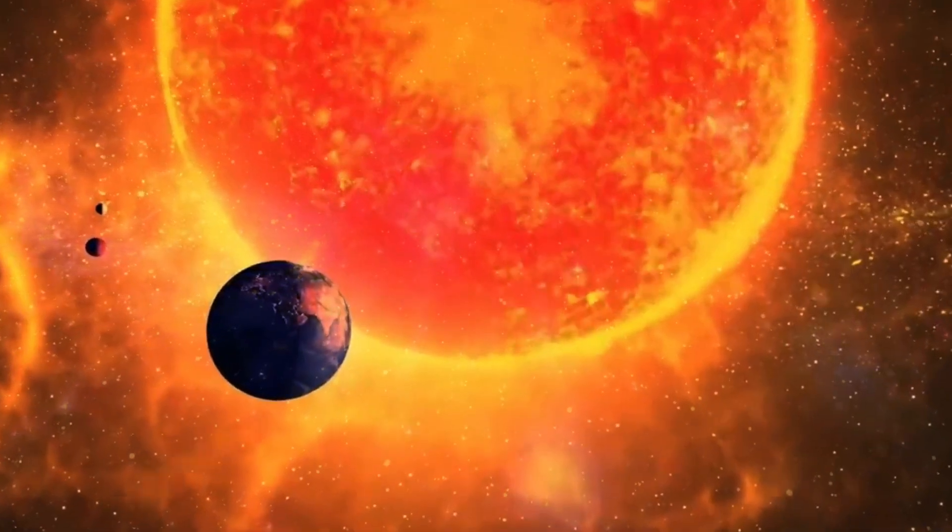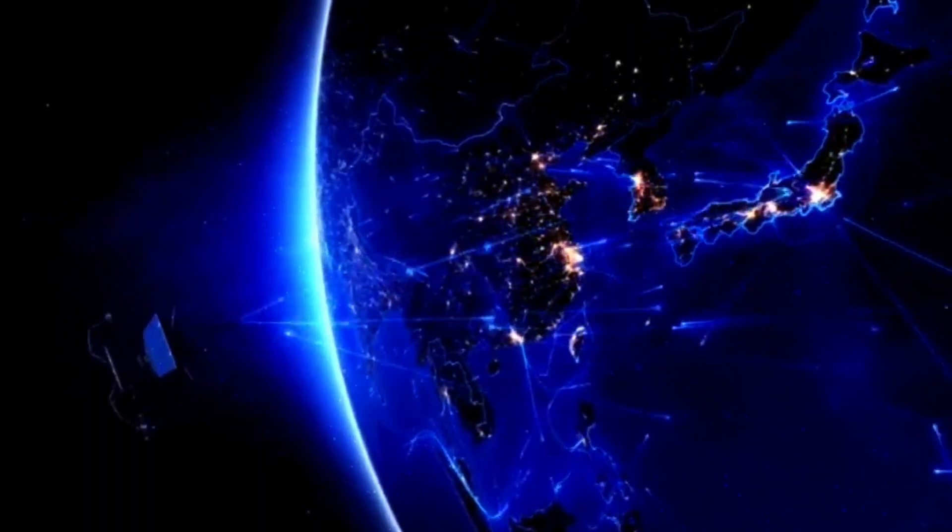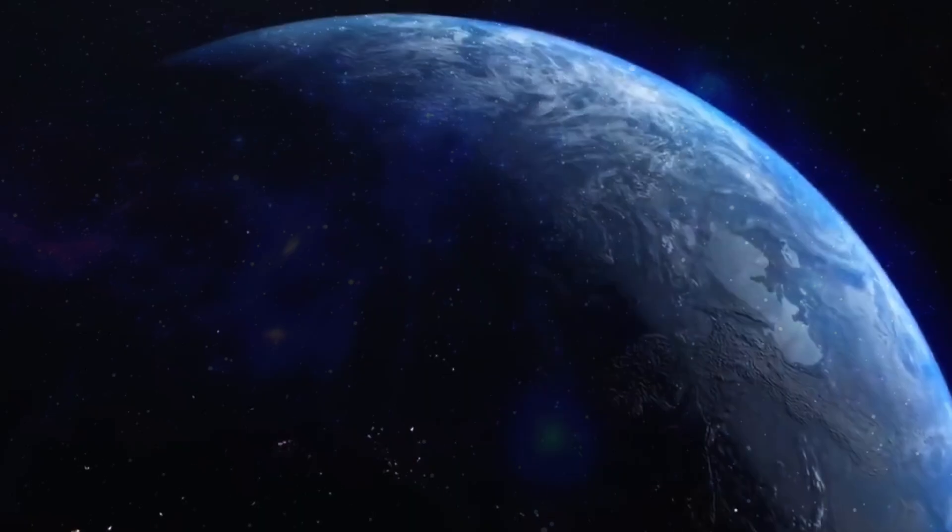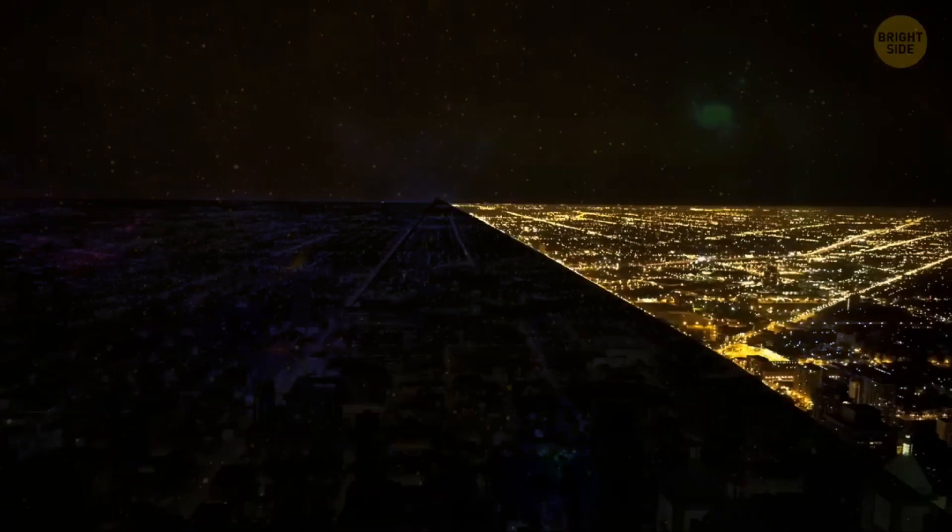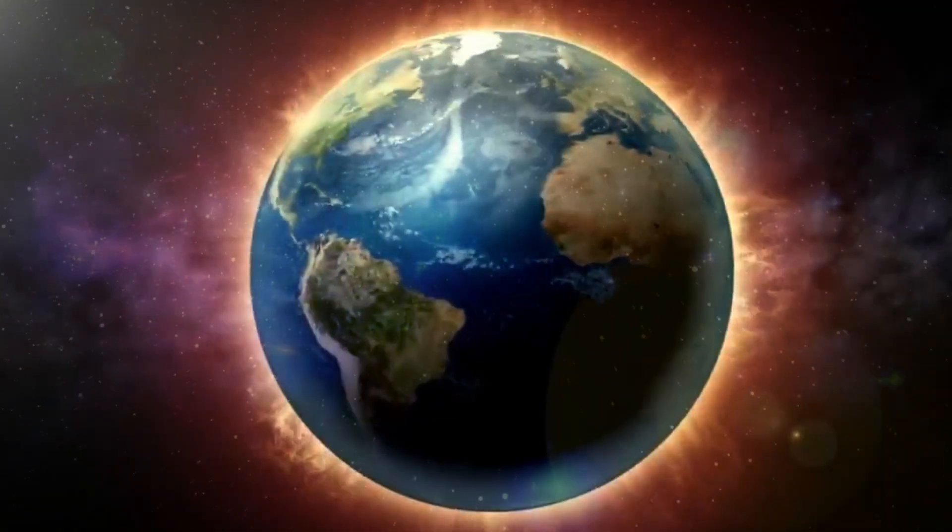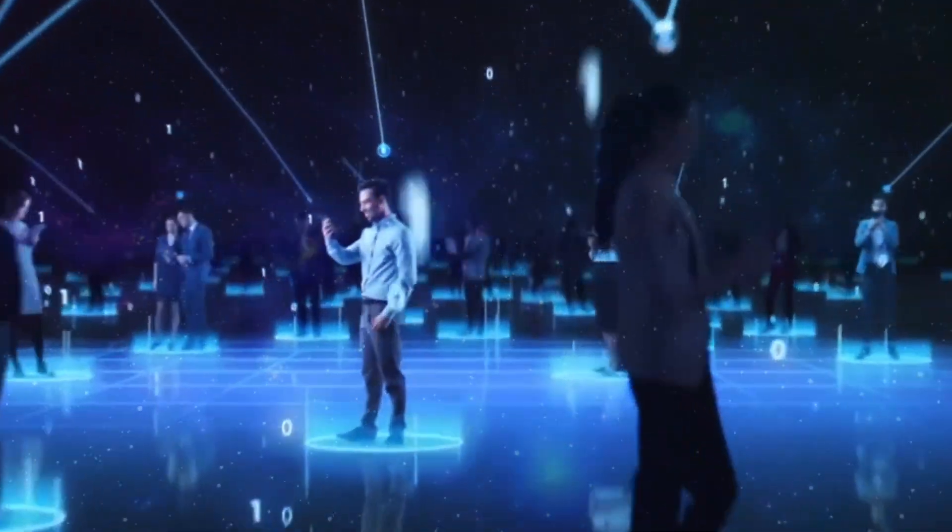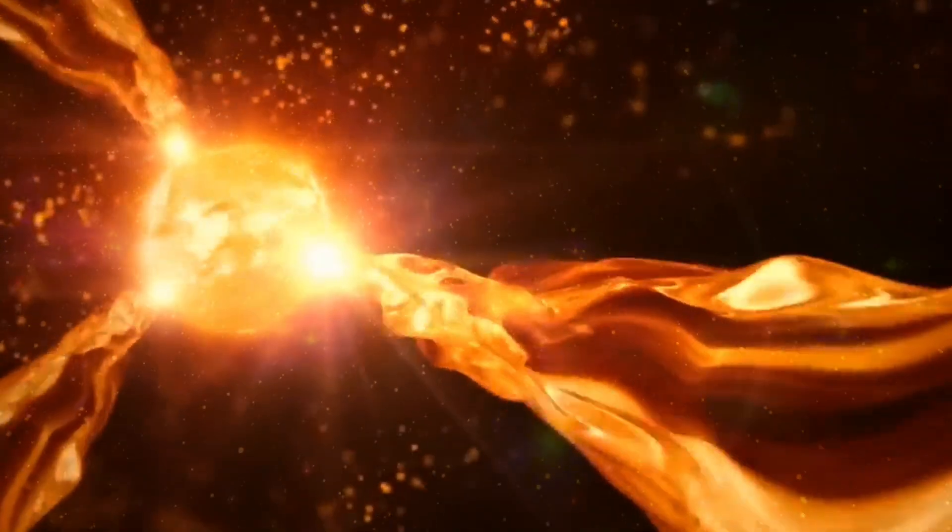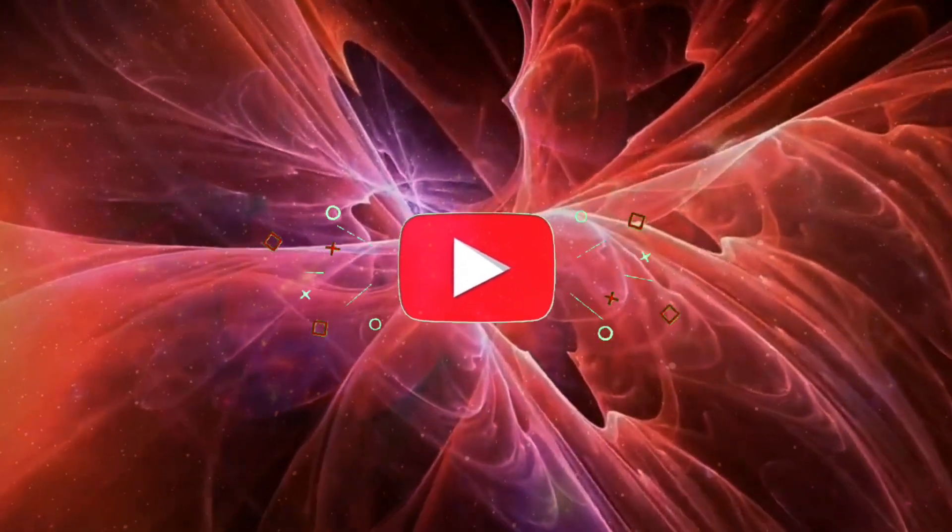While the sun often looks like a peaceful, glowing ball in the sky, it's actually much more active than it appears. From time to time, it likes to remind us of its fiery personality by sending out solar storms, which are essentially enormous bursts of energy. Imagine the sun sending out a wave of energy and charged particles. We're talking about solar flares and mass ejections, which are like giant energetic bubbles that travel through space and can hit planets, including our own.